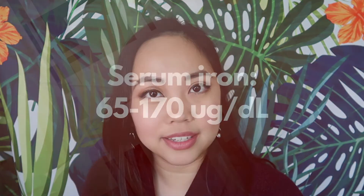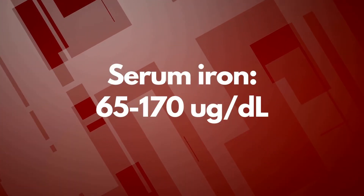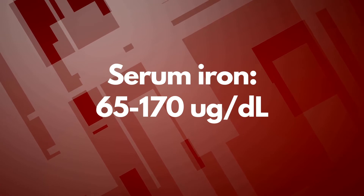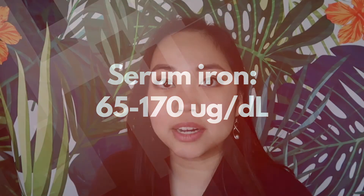Let's move on to lab evaluation of iron, starting with serum iron. Serum iron is the transferrin-bound iron in your blood. The normal range for serum iron for males is 65 to 170 micrograms per deciliter, and for women it's lower.